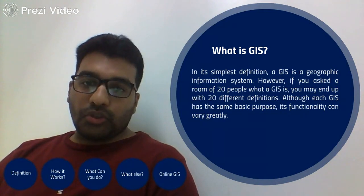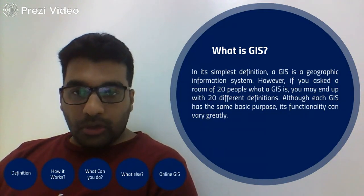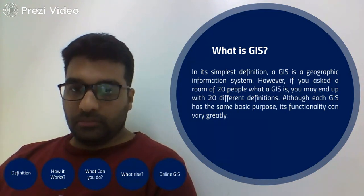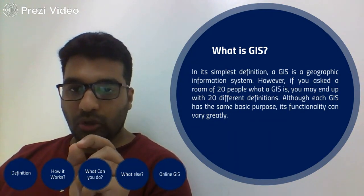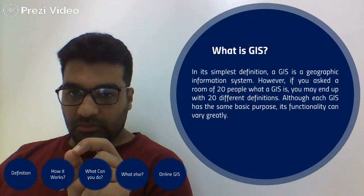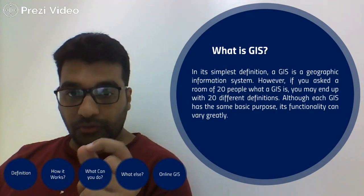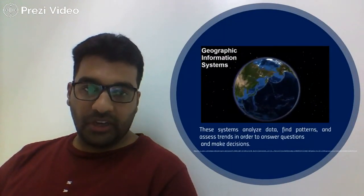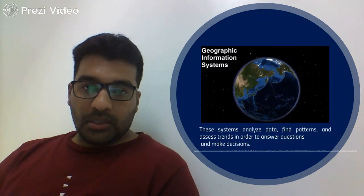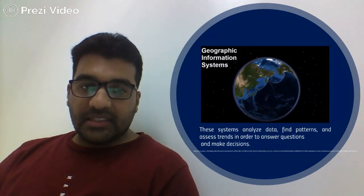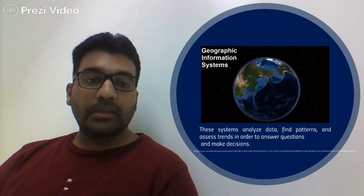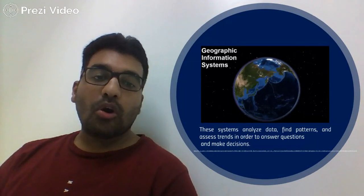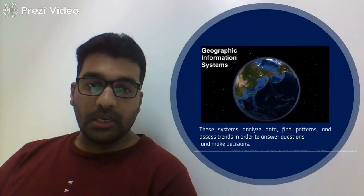So basically, Geographical Information System revolves around the location attribute. Based on that location you can make a lot of good decisions and good visualizations. The systems analyze data, find patterns, and access trends in order to answer questions and make decisions.